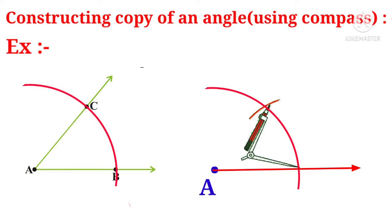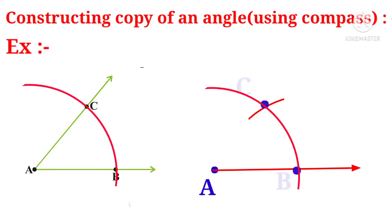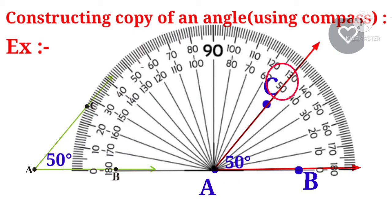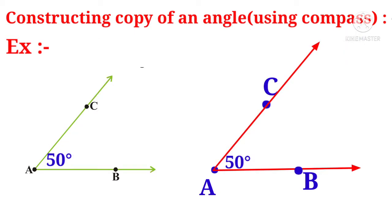The intersecting points are identified and named as C and B respectively. Now join A and C, and a new copied angle CAB is formed. Let us measure whether these two angles are correct or not using a protractor. The problem figure is showing 50 degrees and the copied angle is also showing 50 degrees. So the correct angle is constructed.